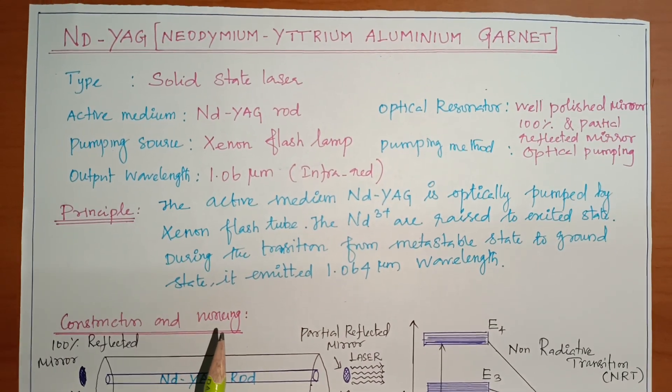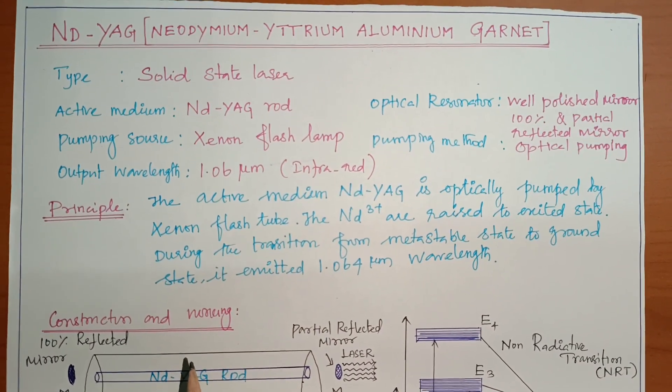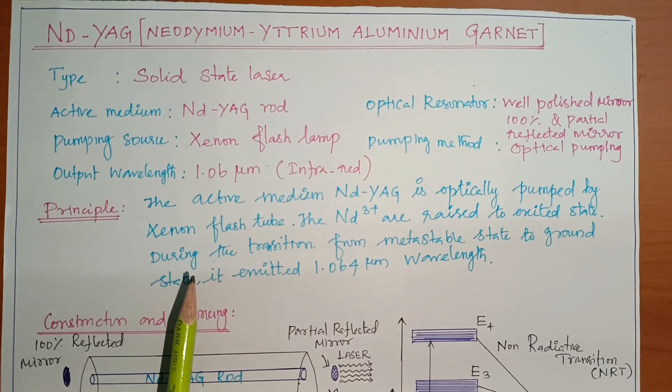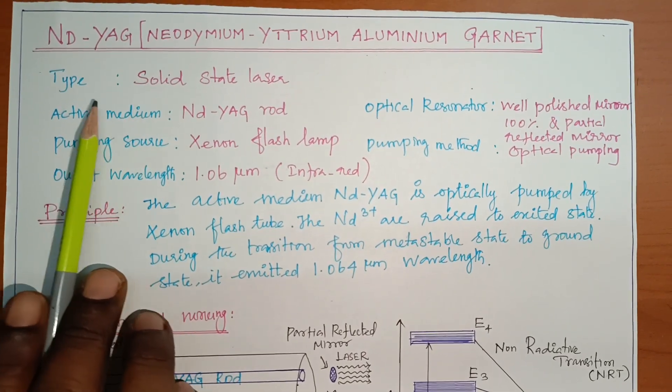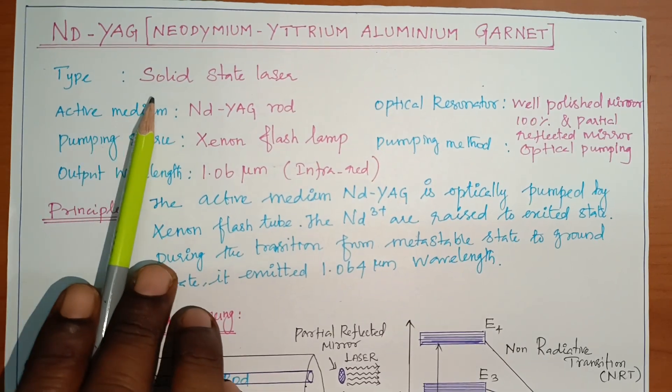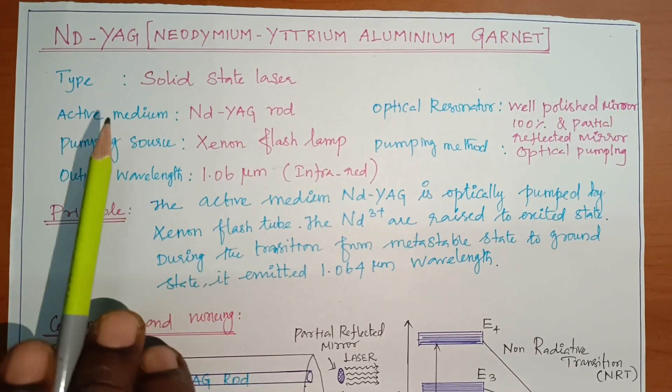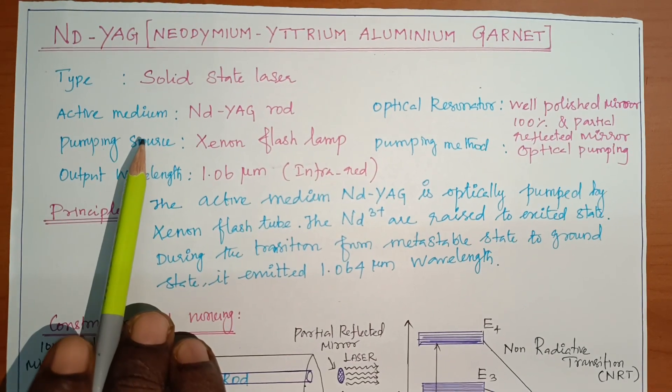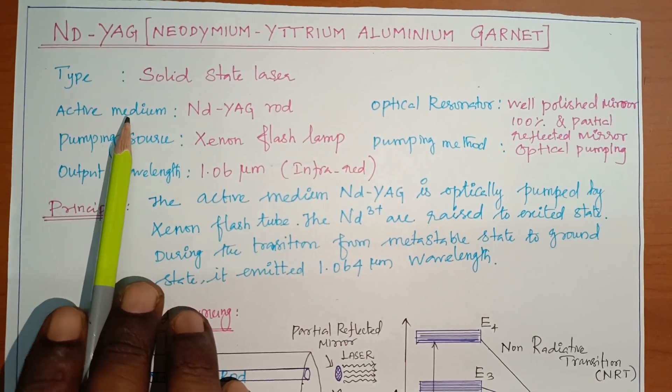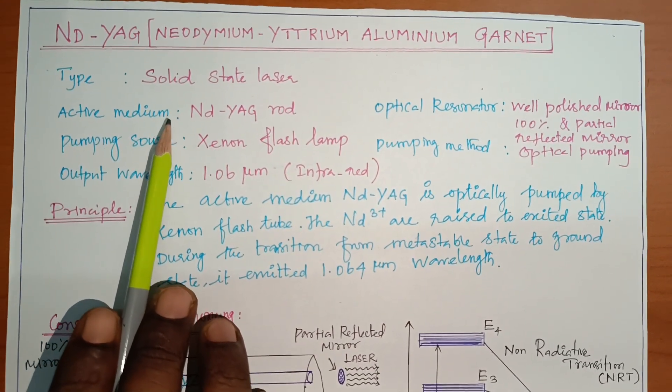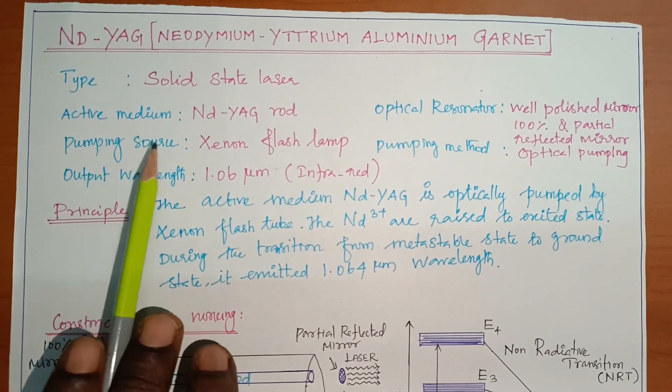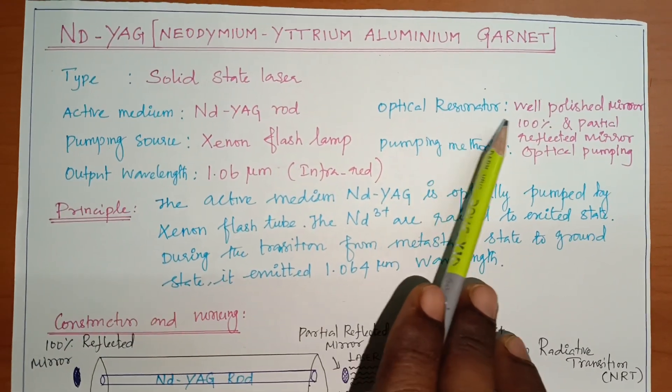So already what all the components we have discussed. So first characteristics we will talk about. So type it is a solid state laser, 4 level laser. That is the 3 components very important to produce laser. One-one active medium, second one pumping source, third one optical resonator.